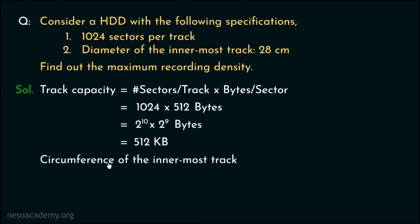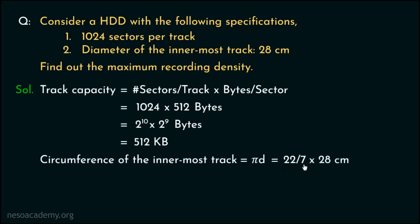Now let's calculate the circumference of the innermost track. We know that the circumference of any circle is 2πr or πd, where d stands for the diameter. We also know that the value of π is close to 22/7, and d here is 28 centimeters. Now 7 fours are 28 and 4 into 22 is 88, so the circumference of the innermost track is 88 centimeters.